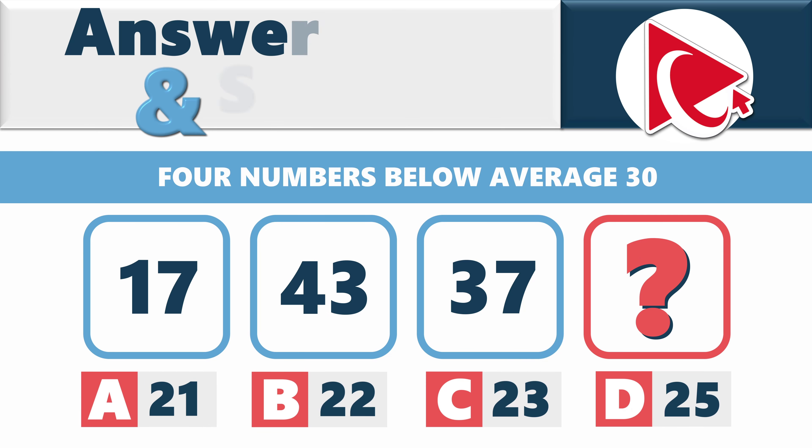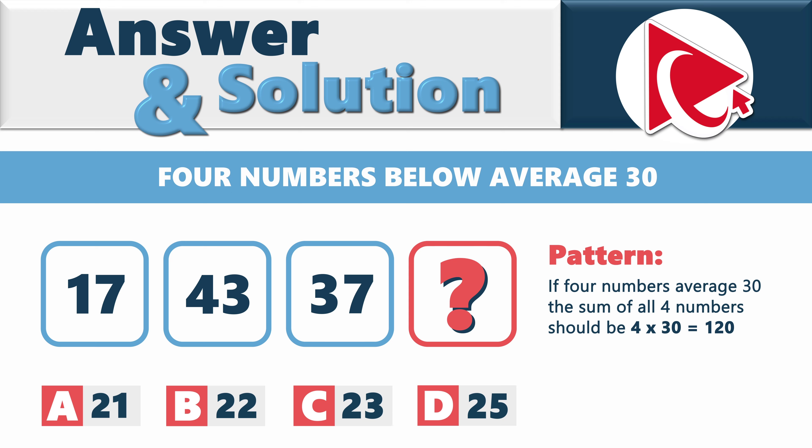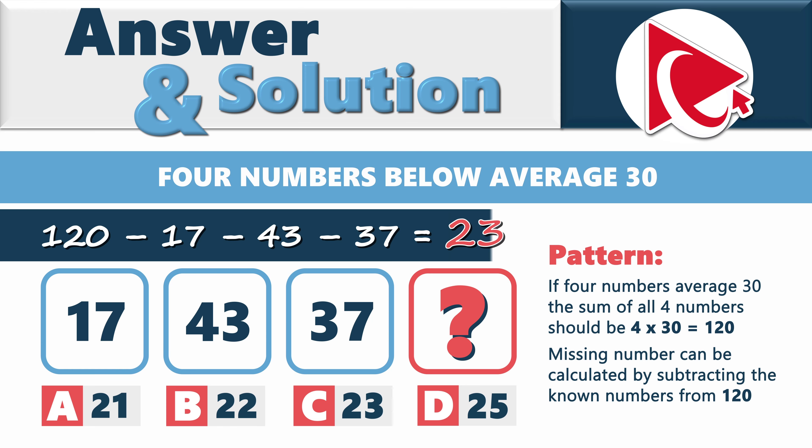The solution here might be simpler than you think. If four numbers average 30, then sum of all four numbers should be 4 multiplied by 30 and equals 120. Which means that missing number can be calculated by subtracting the known numbers from 120. Let's calculate it: 120 minus 17 minus 43 and minus 37 equals 23. So the correct answer here is choice C, 23.